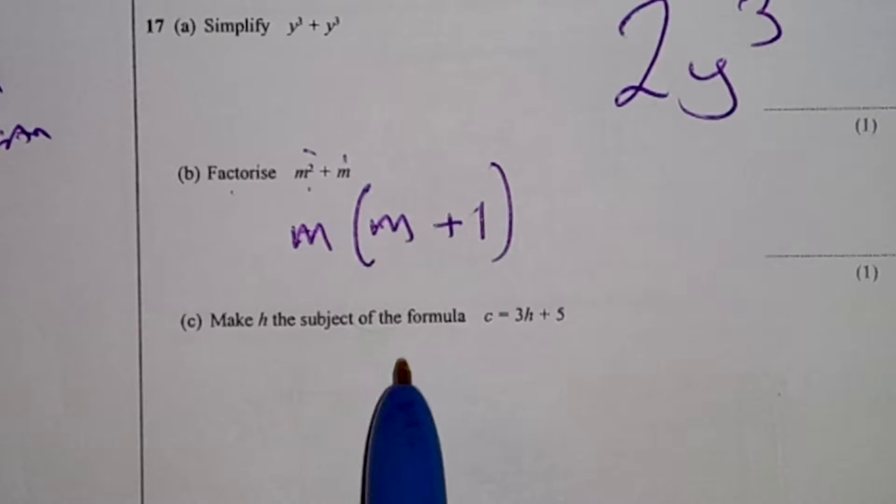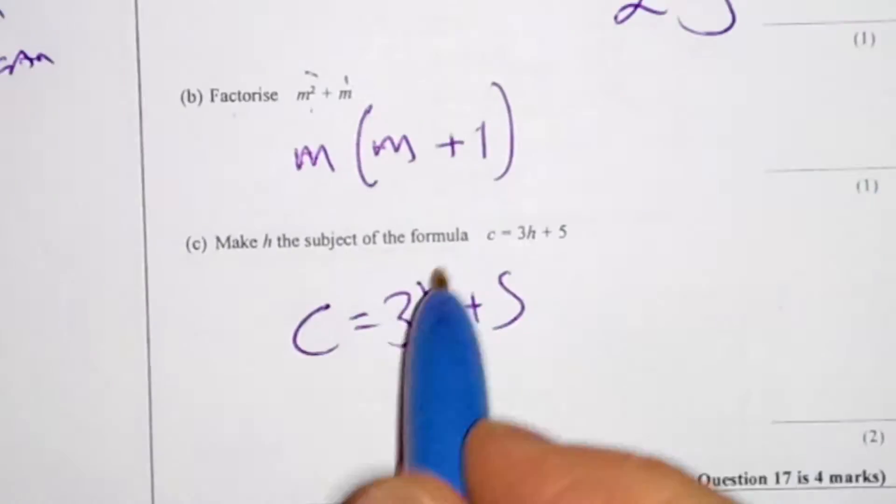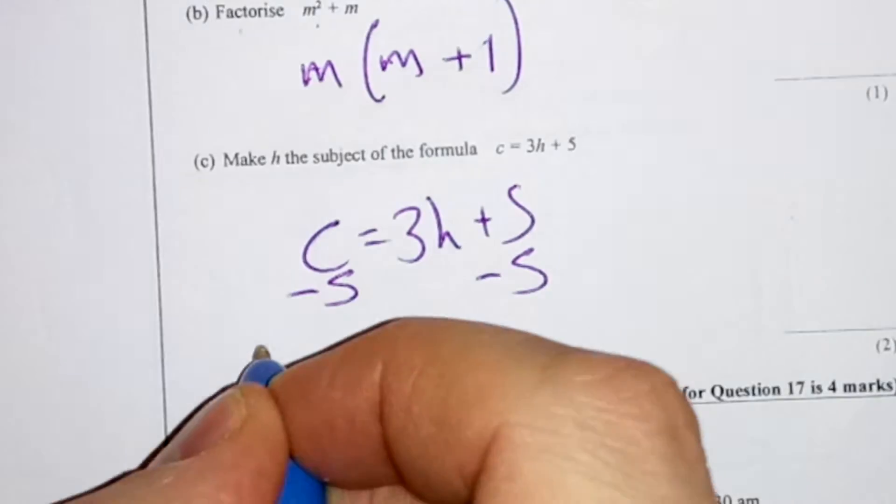Last one. Make h the subject of the formula. c equals 3h plus 5. Look at what's furthest away from the h, which is your 5. So you subtract it. You've got to do it from both sides.